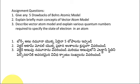For your assignment, the questions are: first, list at least five drawbacks of the Bohr atomic model. Second, explain the main concepts of the vector atom model — spatial quantization and the spinning electron. Third, describe the vector atom model and explain the various quantum numbers required to specify the state of an electron, covering all seven quantum numbers.